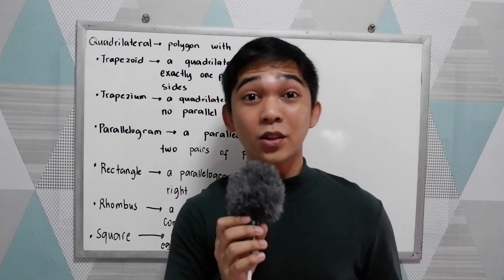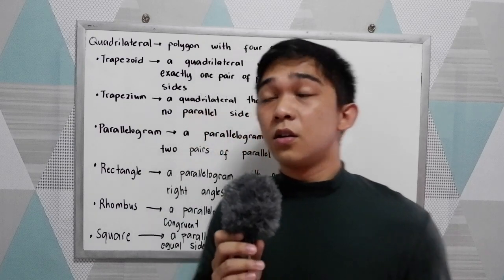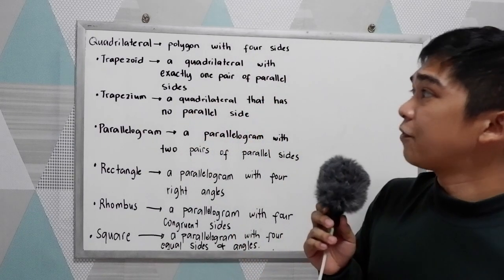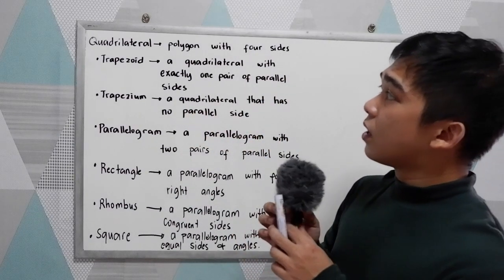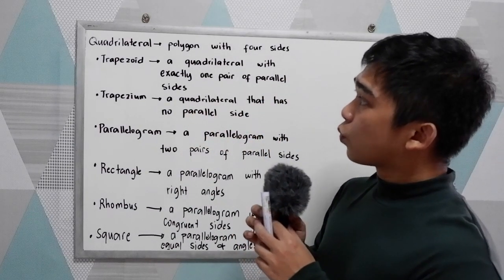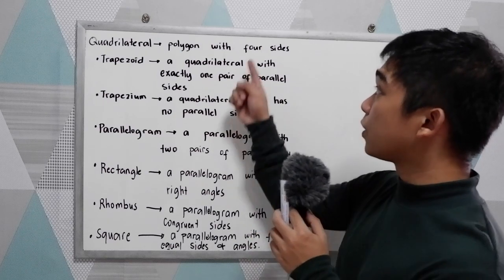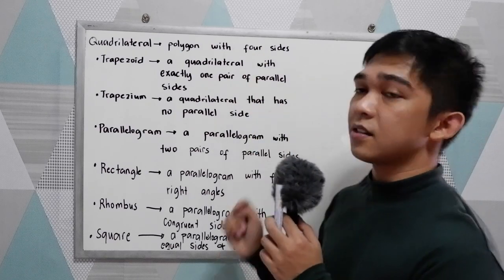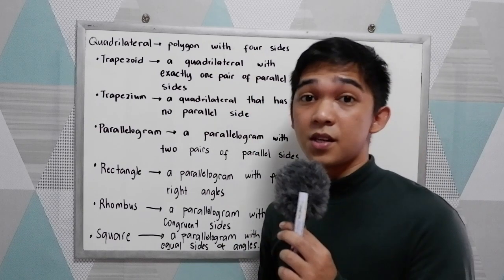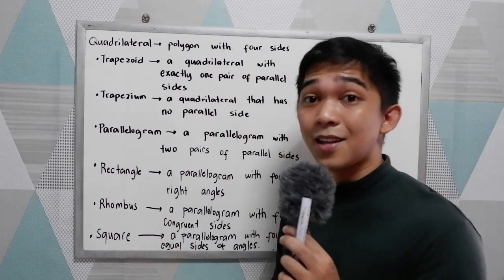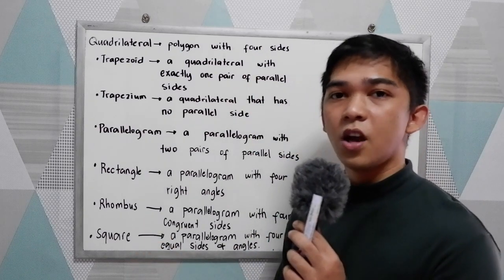Good day everyone. Today I'm going to discuss to you the quadrilaterals. By definition, a quadrilateral is a polygon with four sides, or simply a four-sided polygon.